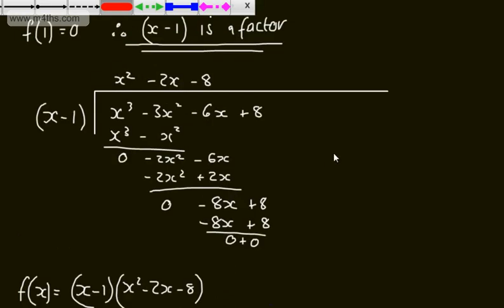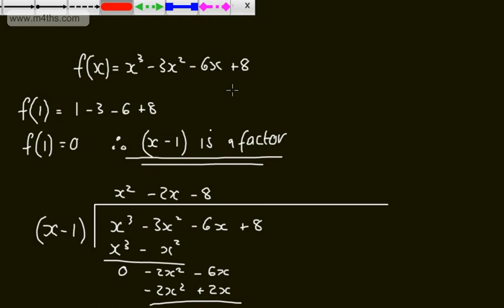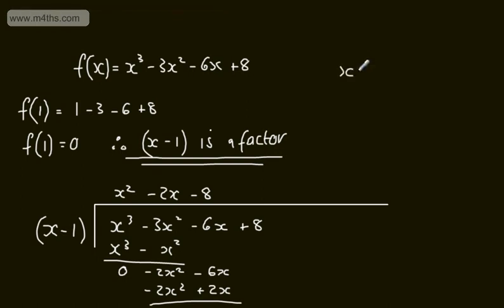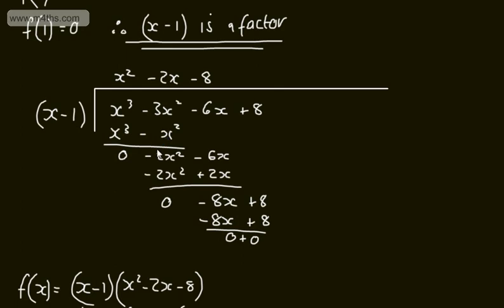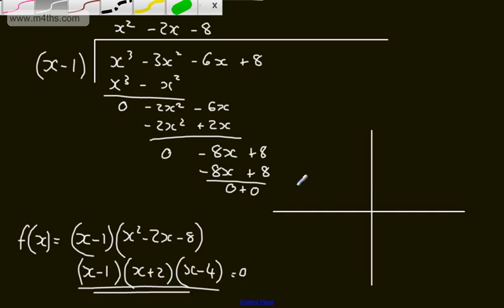If this function of x were set equal to 0, we would write x cubed minus 3x squared minus 6x plus 8 equals 0. Having found our linear factor using polynomial long division, we can now factor fully and read off the solutions, which are x equals minus 2, x equals 1, and x equals 4.